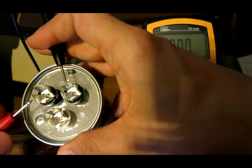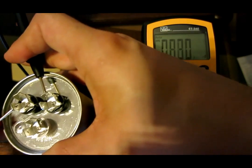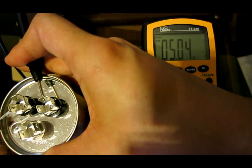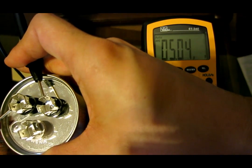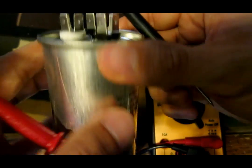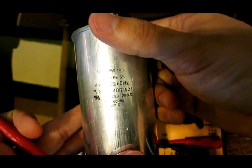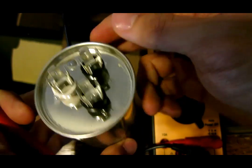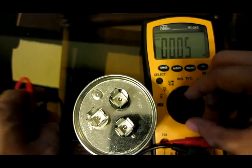And then if I measure the fan, it should say 5. There you go. 5 microfarads. Basically how you measure capacitance on your run capacitor. And good luck replacing it.